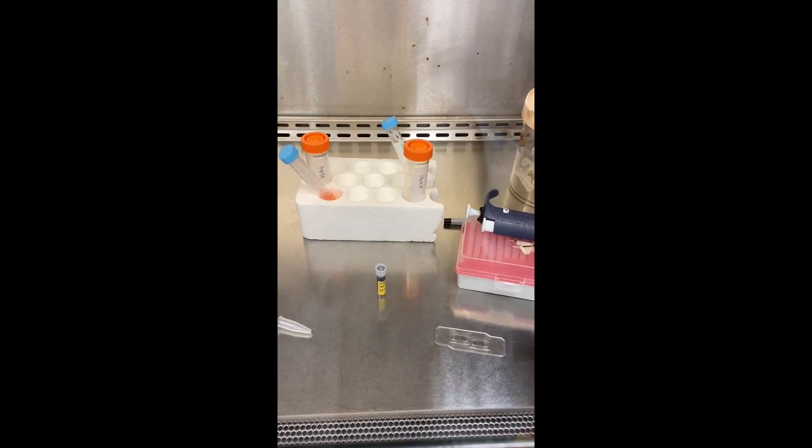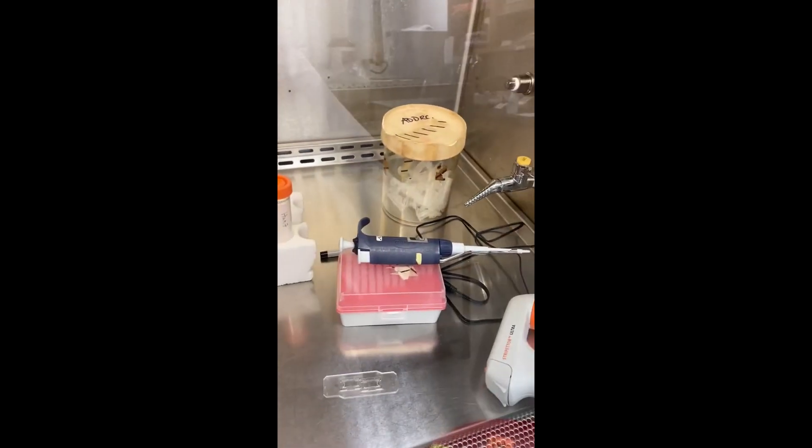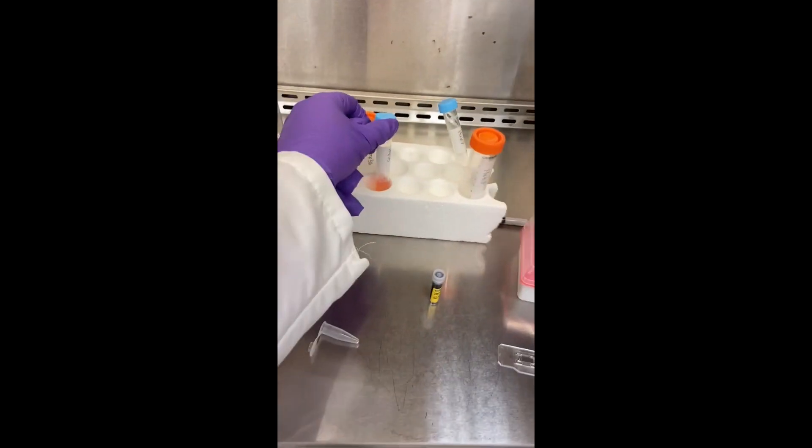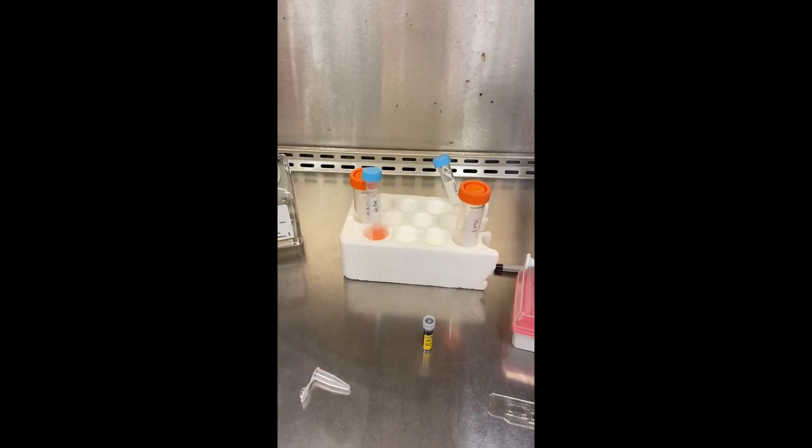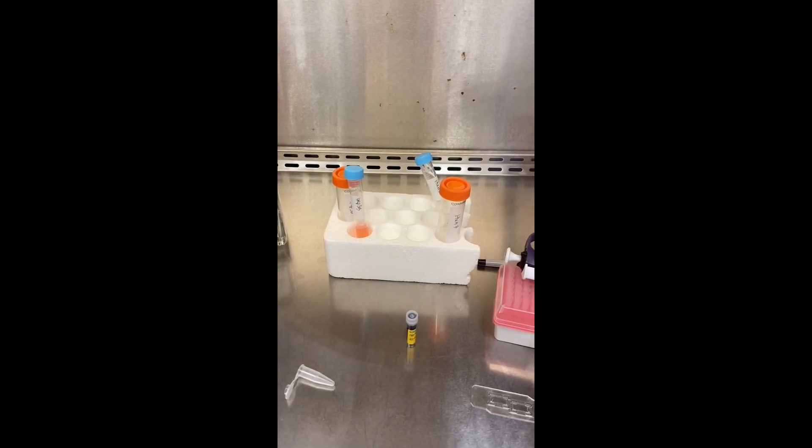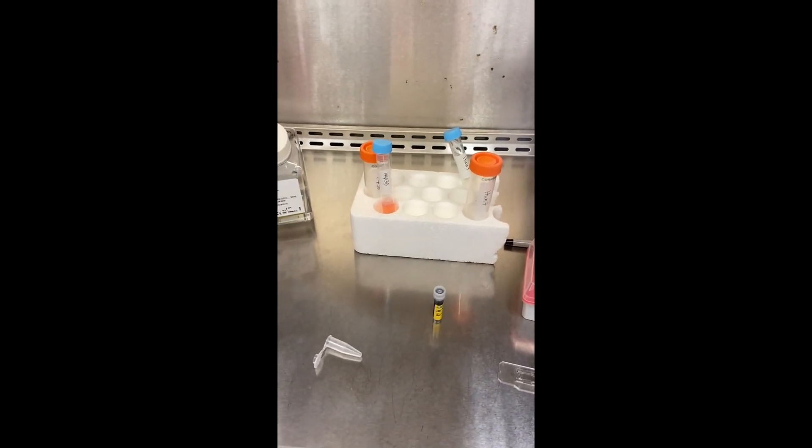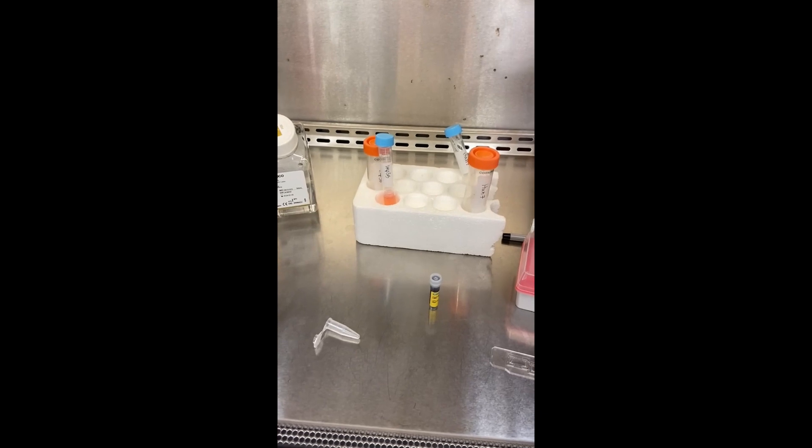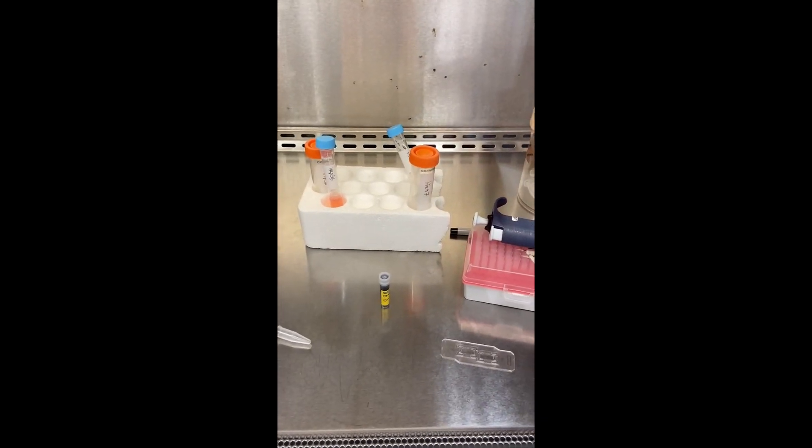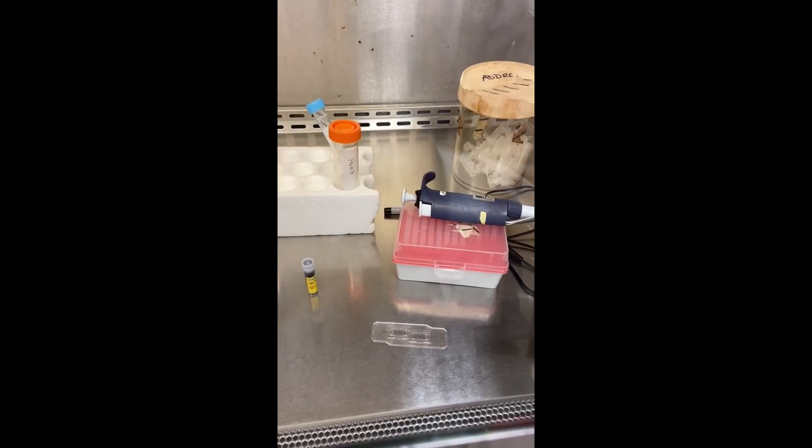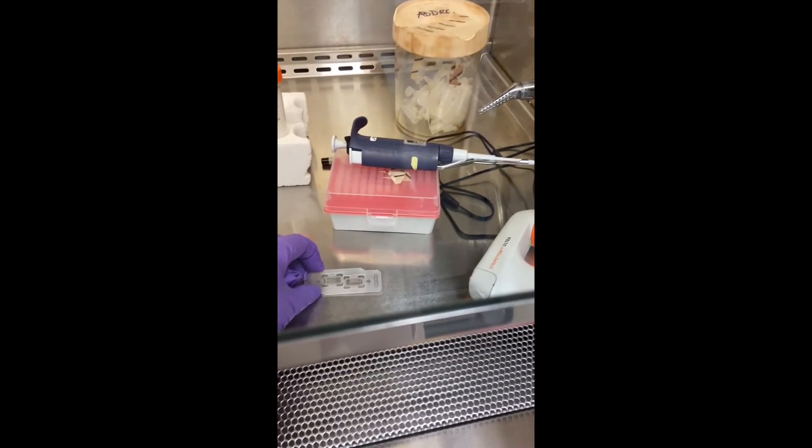So what I'm showing you right now in this tube is a mixture of my cells that I am getting ready to count. This is all in the tissue culture hood, so I have my eppendorf tube, my trypan blue, my pipette, and my slide counter.